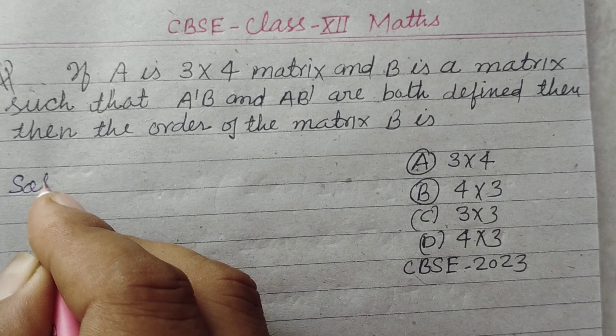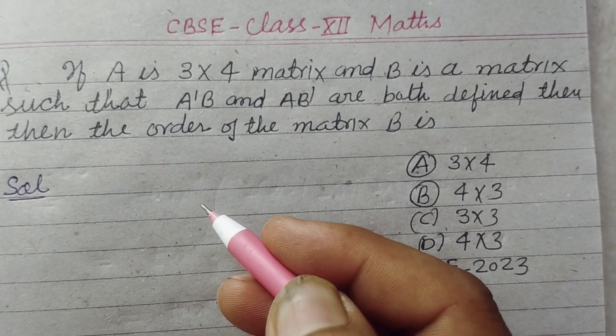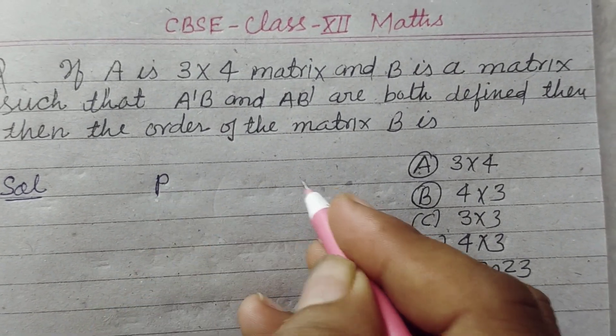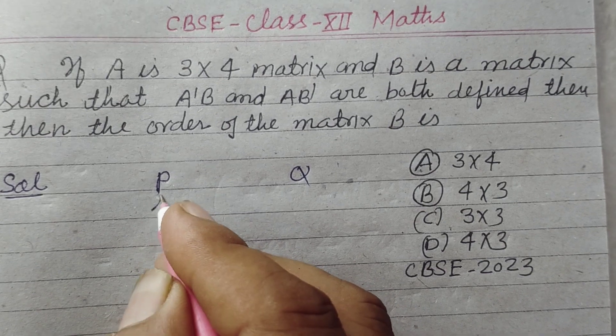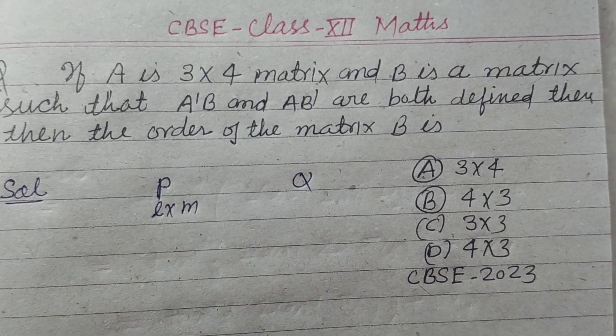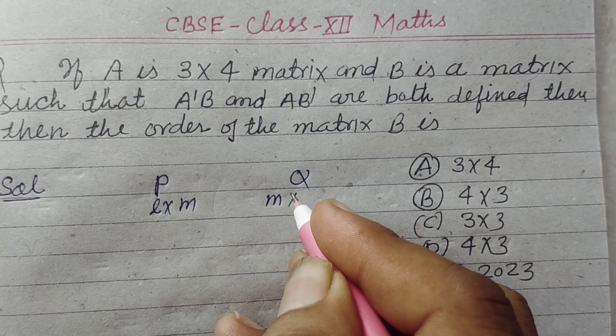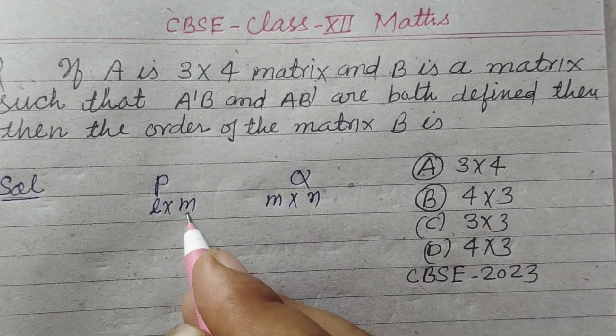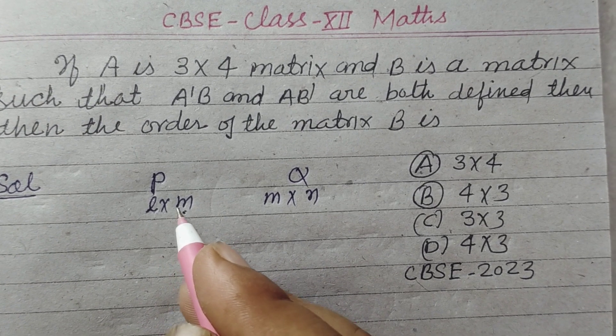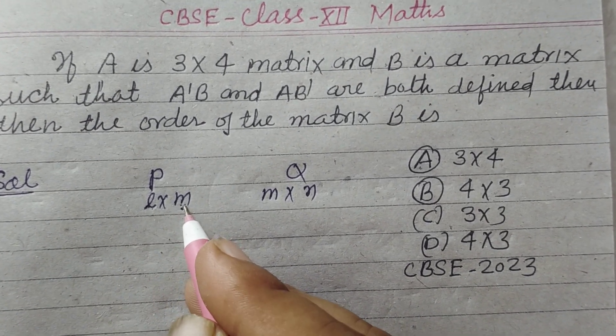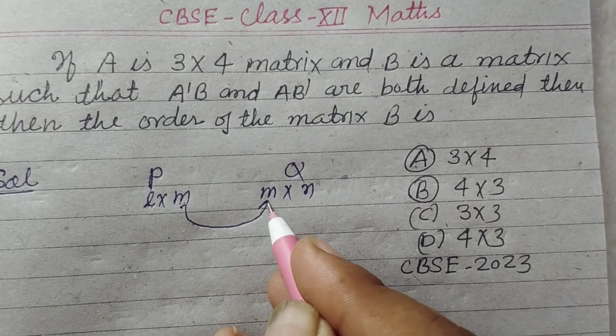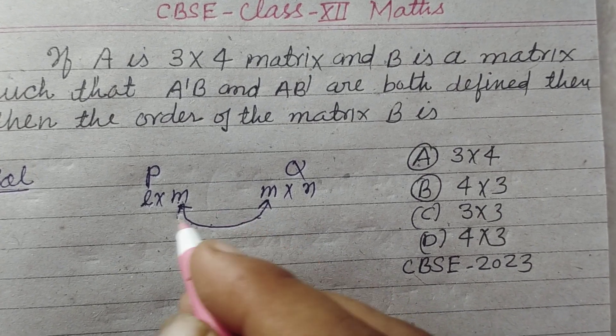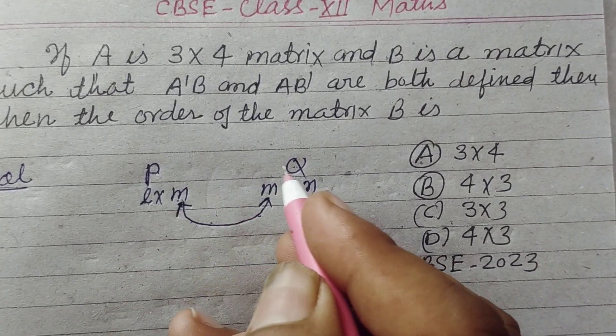So student, you know that two matrices are multiplied, two matrices P and Q are multiplied if their orders are L into M and M into N. Its column should be equal to its row for the multiplication of these two matrices.